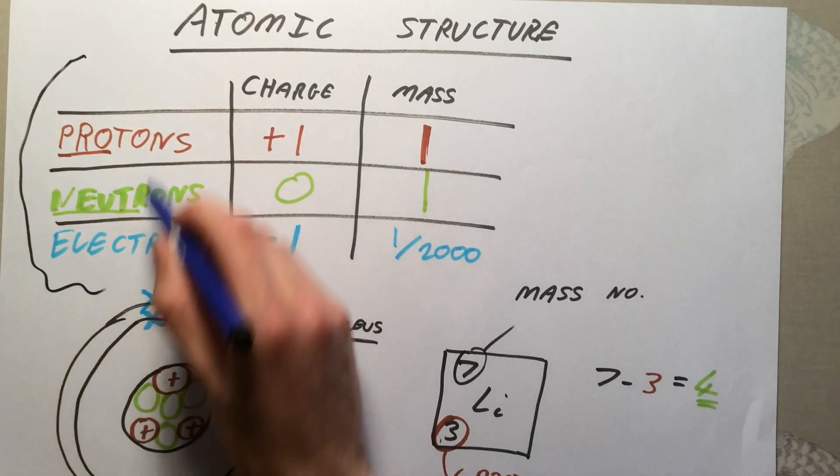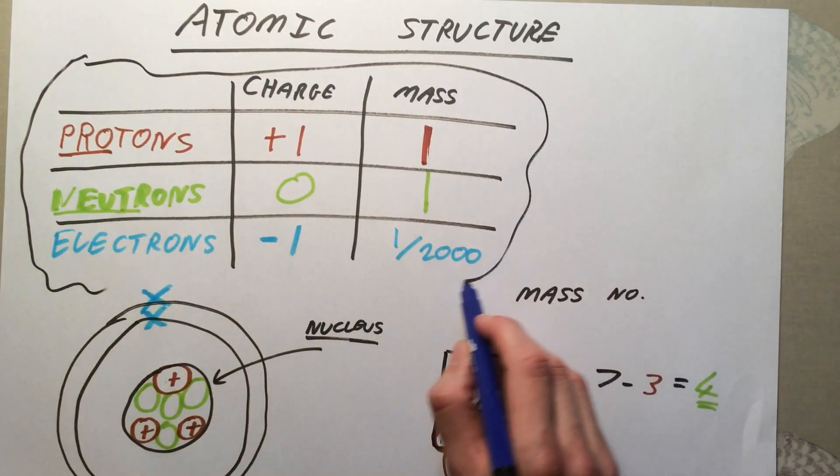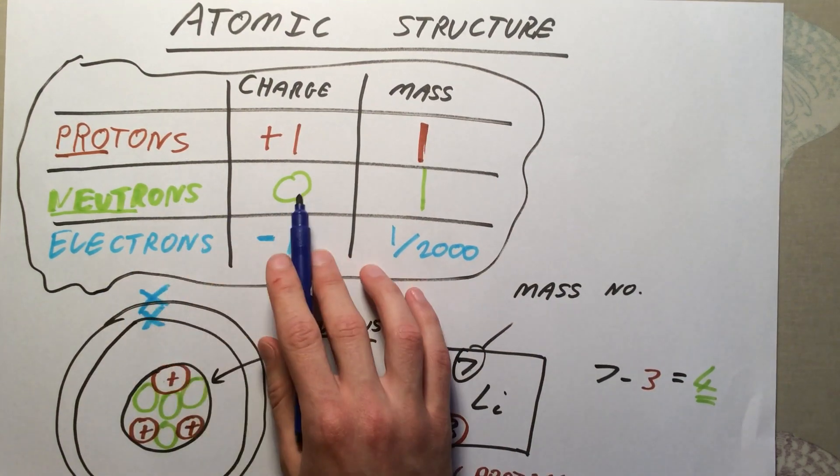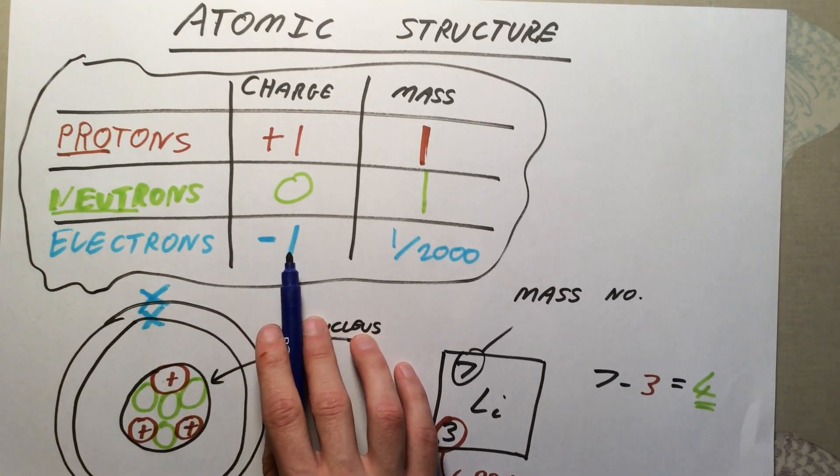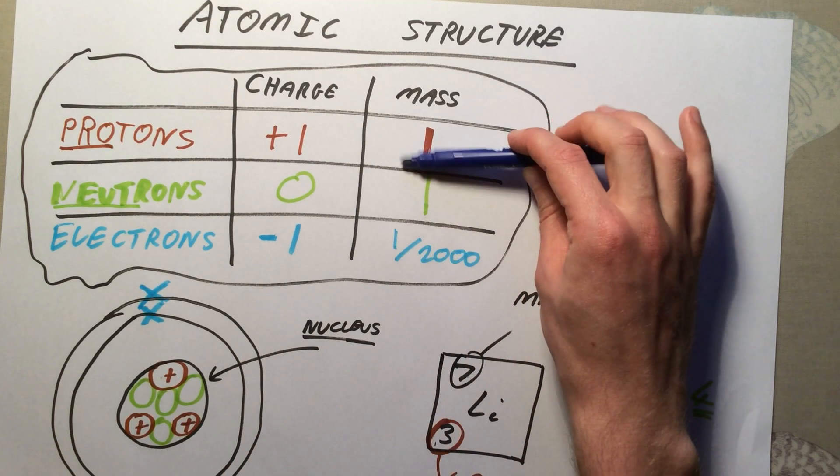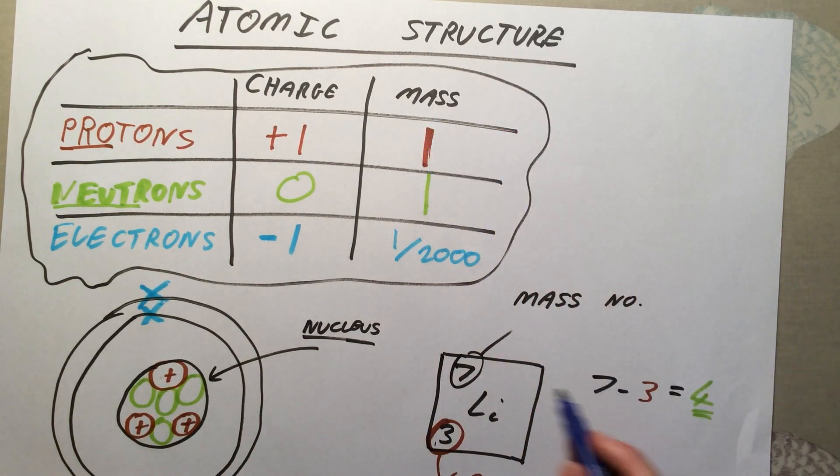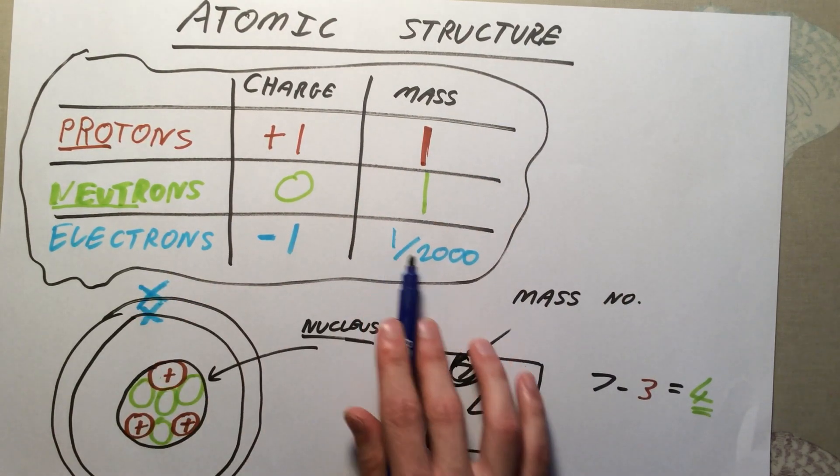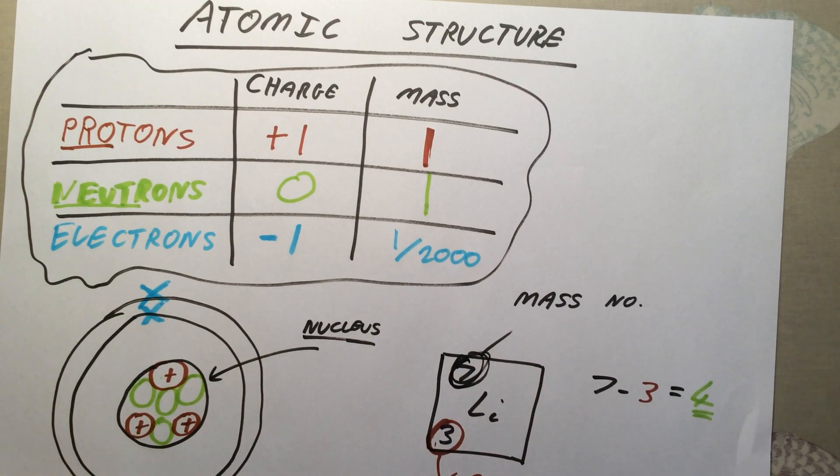This is the real key point you need to remember. Protons have a positive charge, plus one. Neutrons have no charge. Electrons have a charge of negative one. Remember the masses - protons and neutrons contribute to this mass number, the larger number in your element. Electrons have a mass of 1 over 2,000.